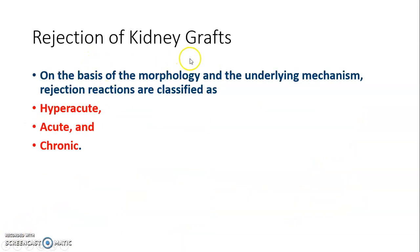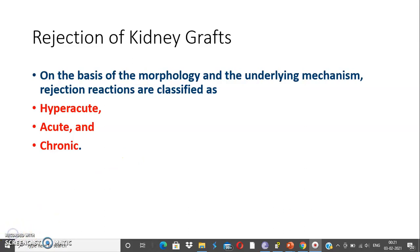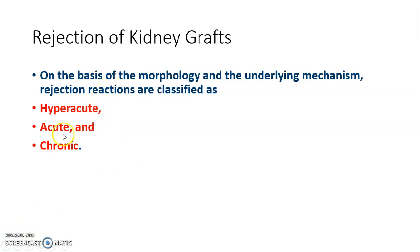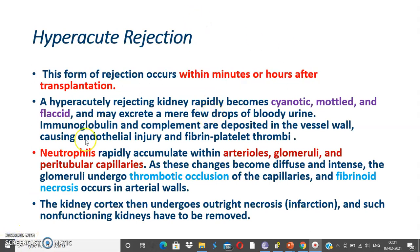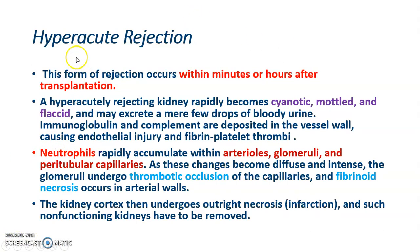Regarding rejection of kidney grafts: on the basis of morphology and the underlying mechanism, rejection reactions are classified as hyperacute, acute, and chronic. Hyperacute rejection occurs within minutes or hours after transplantation.